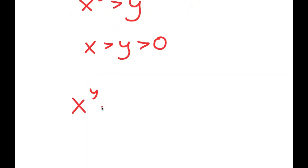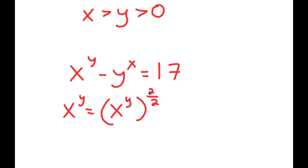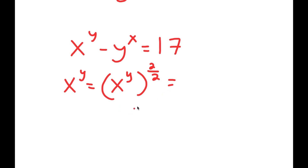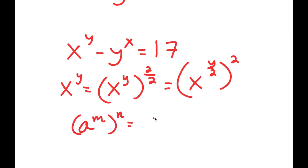I'm going to rewrite my equation: x to the power of y minus y to the power of x is equal to 17. And x to the power of y, I can rewrite this as x to the power of y times 2 over 2, because 2 over 2 is the same thing as 1. And x to the power of y to the power of 1 is the same as x to the power of y. This I can rewrite as x to the power of y over 2, to the power of 2, because if I have something in the form a to the power of m to the power of n, this is the same thing as a to the power of m times n.